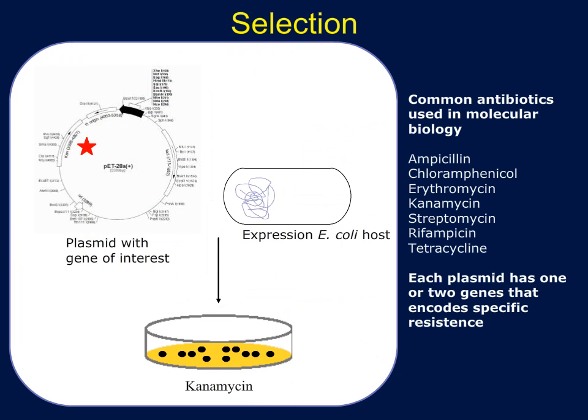During the transformation, not all E. coli pick up the plasmid. Thus, the plasmid has been encoded with an antibiotic resistance gene. In this plasmid, PET-28, the antibiotic resistance gene encodes for a protein that can degrade kanamycin. It is highlighted with a red star in the vector map. This allows all the bacteria that do not contain the plasmid to be killed with the antibiotic. Thus, the surviving E. coli all contain the plasmid that has the gene of interest in it. This process is called selection.